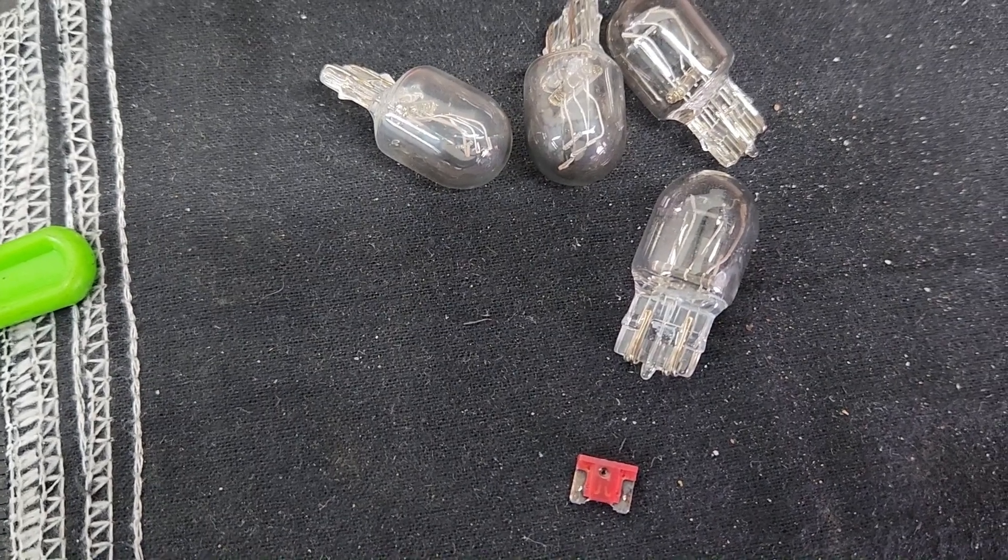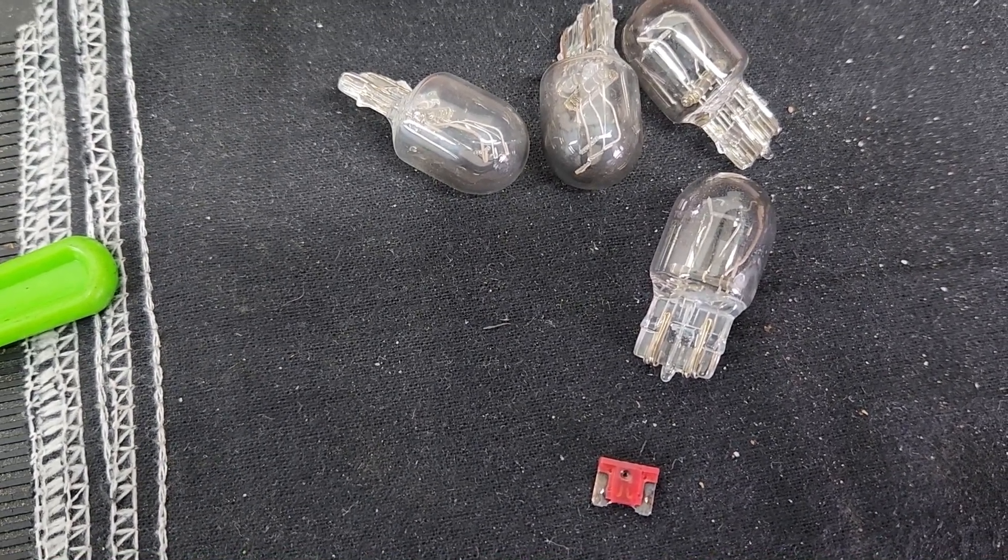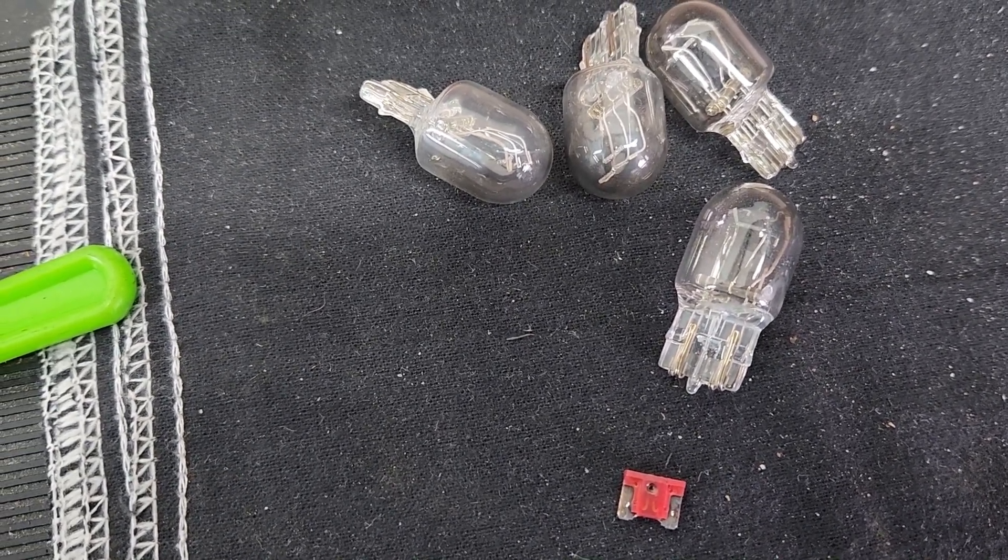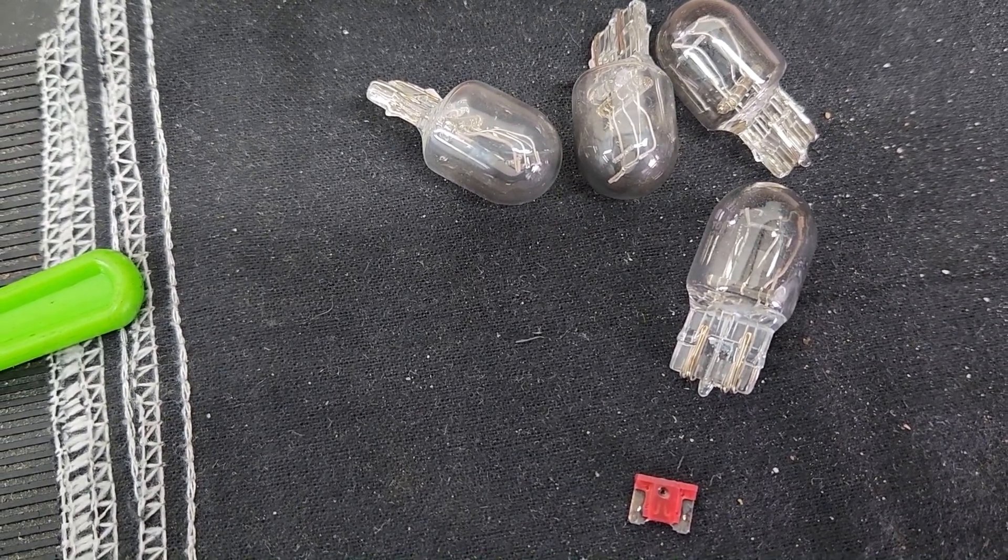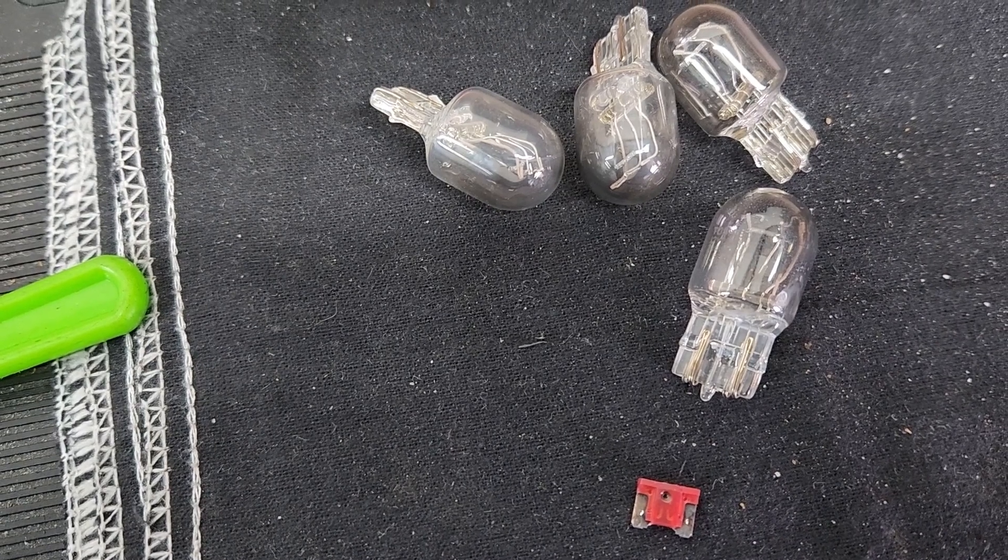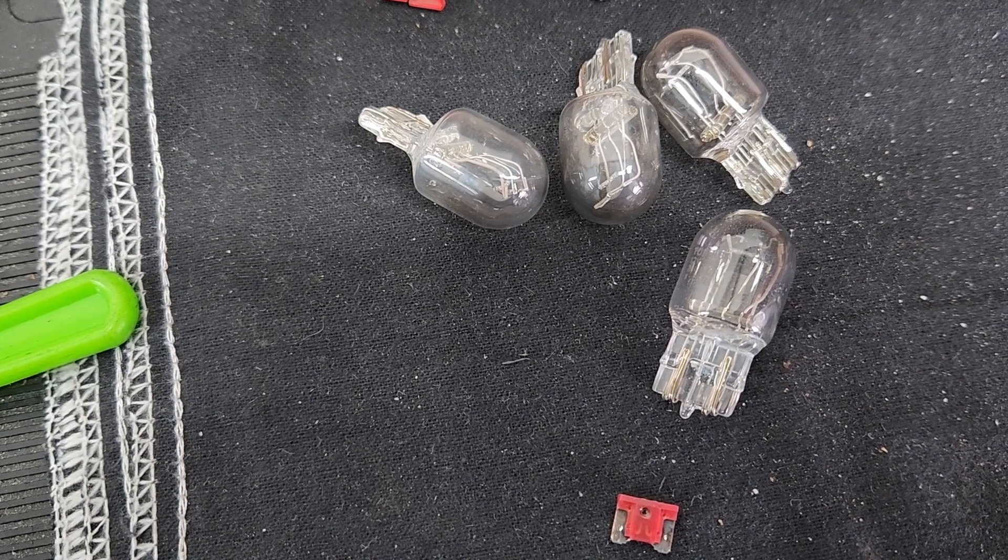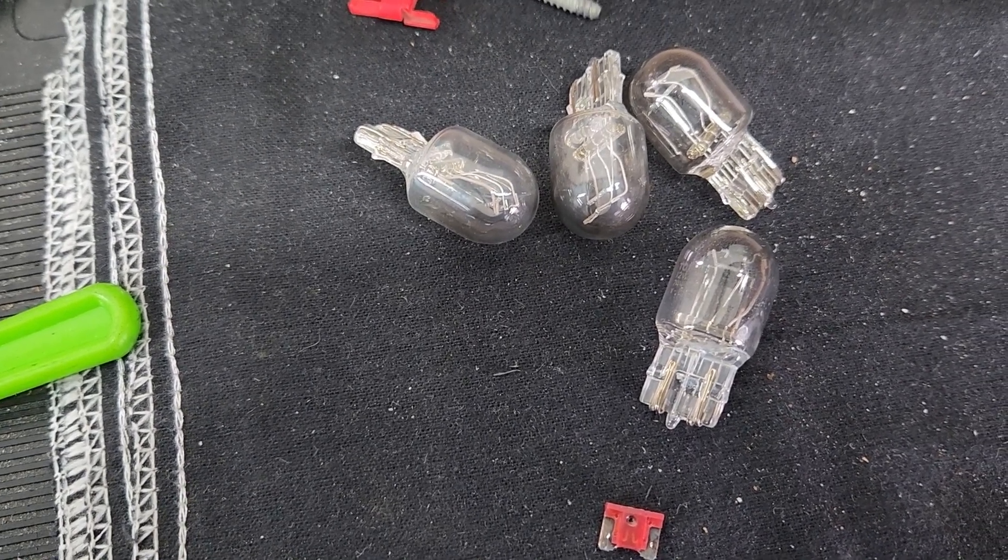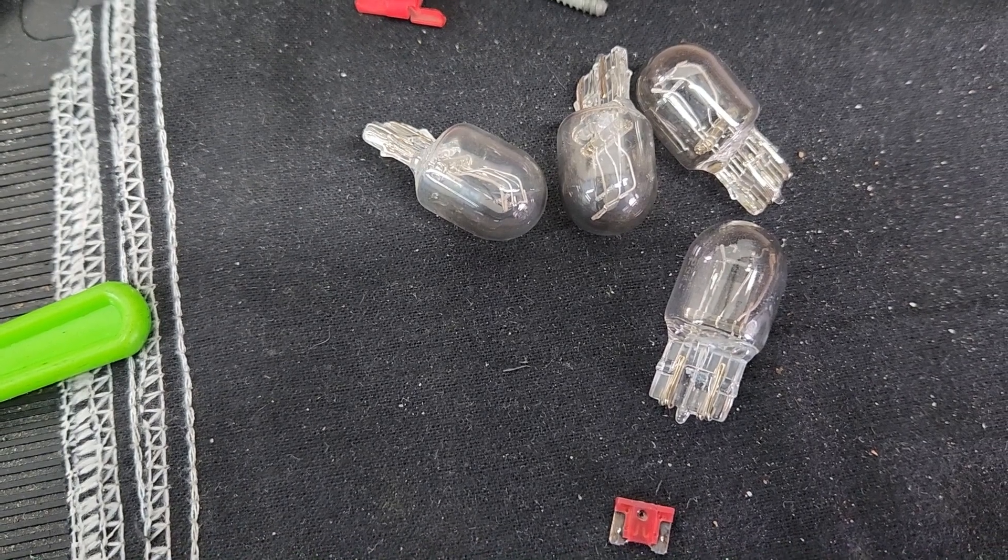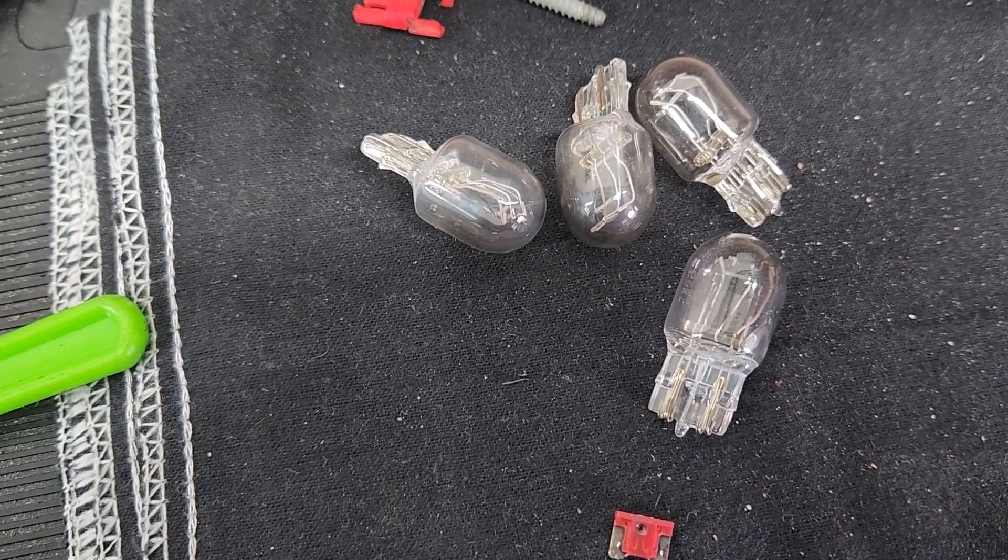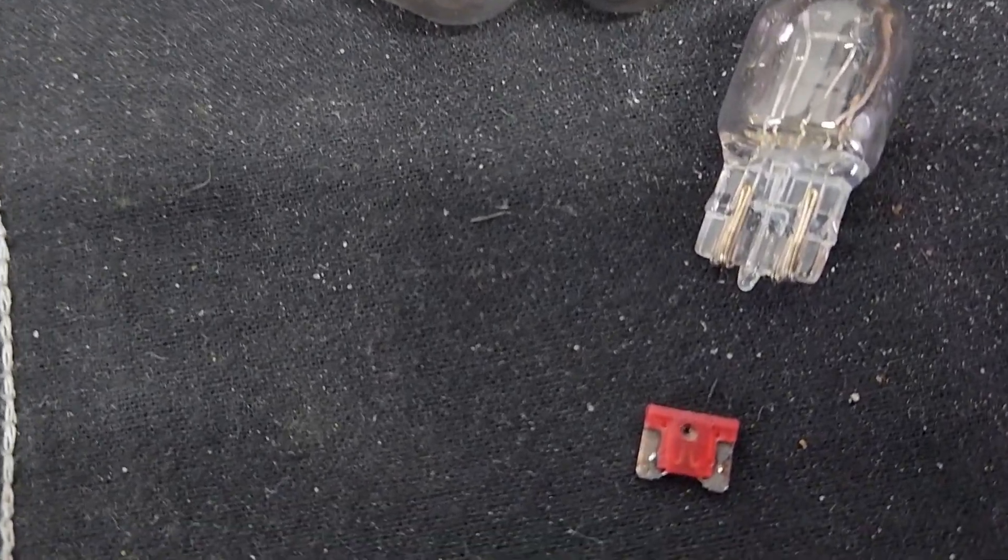The interesting thing to me about these bulbs and this fuse are that these bulbs here, they're original of the vehicle, or they were updated immediately after the vehicle was bought, are 7444 bulbs. All the catalogs say to put 7443 bulbs back in. And if you do the math, you'll find out these bulbs draw, all four together draw right at or slightly over the current limit of the 10 amp fuse. So if you hold your brakes for an extended period of time over years, it'll eventually melt the fuse out.